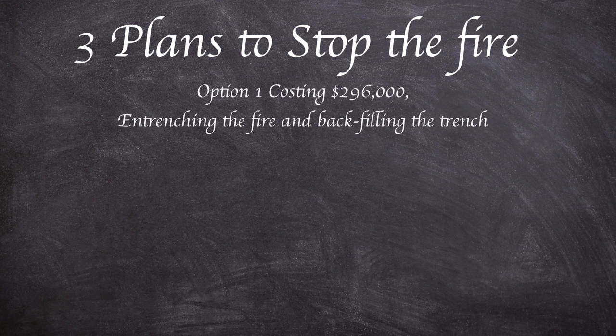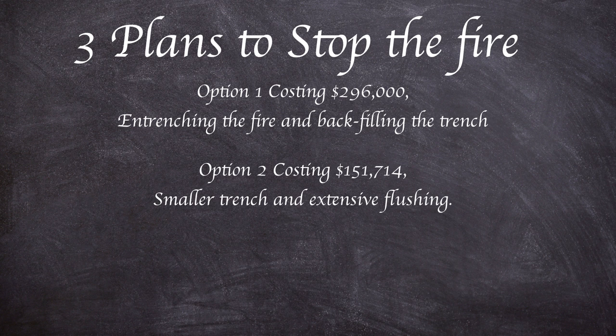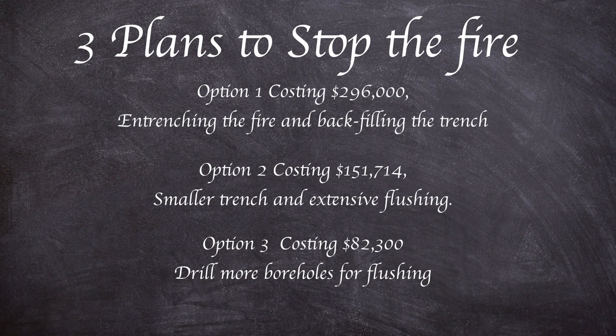Option 1 costing $296,000 consisted of entrenching the fire and backfilling the trench with incombustible material such as clay. Option 2 costing roughly $151,000 offered a smaller trench in an incomplete circle followed by extensive flushing. Option 3 was to drill more boreholes for flushing and would cost around $82,000.